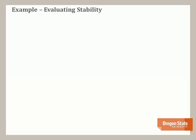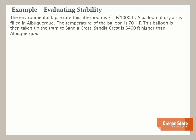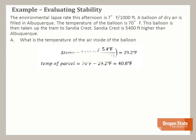Here is an example of how this applies. The environmental lapse rate this afternoon is 7 degrees Fahrenheit per thousand feet — that is the measured temperature of the atmosphere. A balloon of dry air is filled in Albuquerque; the temperature of the balloon is 70 degrees Fahrenheit. The balloon is then taken up the tram to Sandia Crest, which is 5,400 feet higher than Albuquerque. Using the dry adiabatic lapse rate, the change in temperature is 29.2°F, and the temperature of the air inside the parcel at Sandia Crest would be 40.8 degrees Fahrenheit.